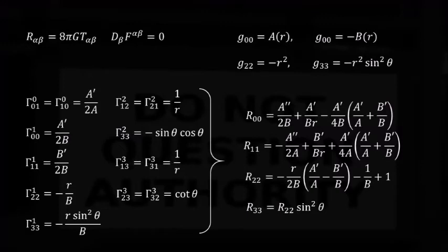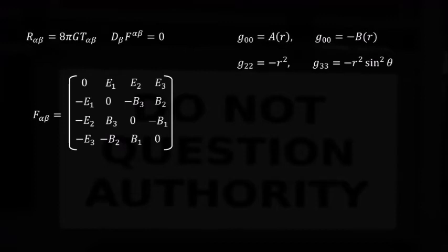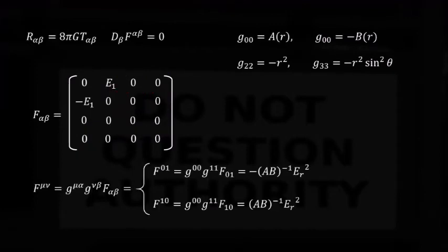For now, this is as far as we can get on the left-hand side of the Einstein's equations. Let's work out the right-hand side now. In matrix form, the electromagnetic tensor looks like this. Since everything is static, we can set the magnetic field to zero. Also, thanks to spherical symmetry, we can also set these components of the electric field to zero.